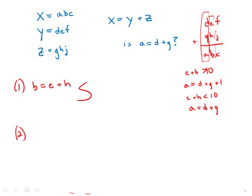Statement 2 tells us about the ones digits: the units digit of x, which is c, equals the sum of the units digits of y and z. Well, that's nice, but it tells us nothing about what's going on in the tens digit. If the ones digits have this pattern, then nothing would be carried from the ones digit to the tens digit. But we have no idea what's going on in the tens digit and whether something carries there or not. So this statement is insufficient. Statement 1 is sufficient, Statement 2 is insufficient, so the answer is A.